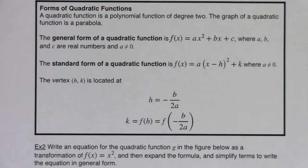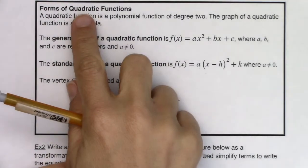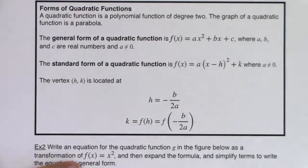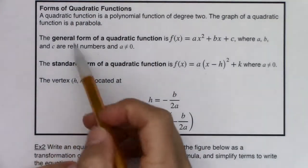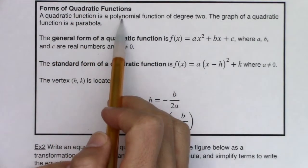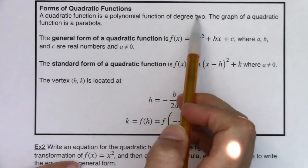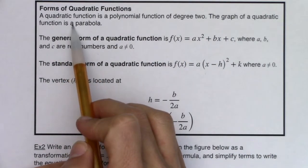Hey, Mount 31. Let's take a look at the different forms for quadratic functions. A quadratic function is a polynomial function of degree 2. The graph of a quadratic function is a parabola.